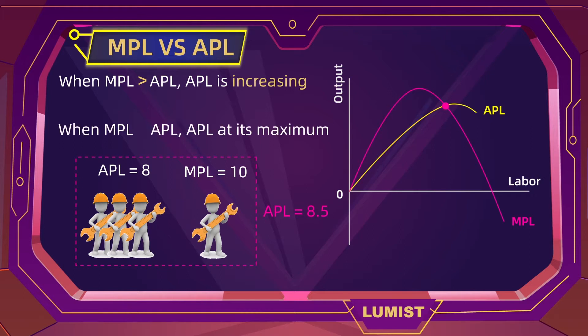When marginal product of labor equals average product of labor, then APL will be at its maximum, because once marginal product is below average product, average product of labor starts to decrease.